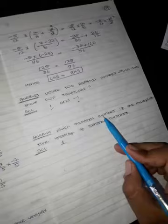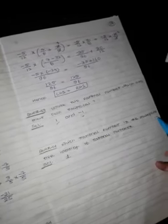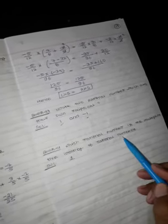Question number 14: which rational number is the multiplicative identity of rational numbers? So 1 is always the identity number.